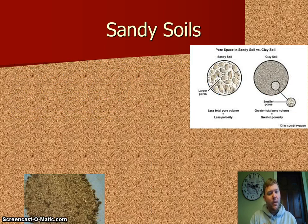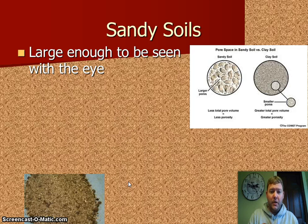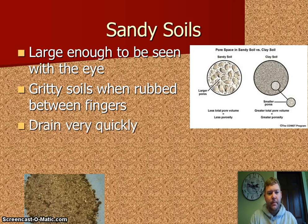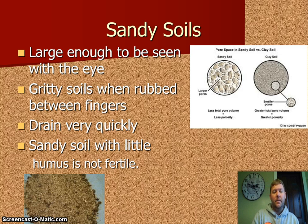Now sandy soils: they drain pretty quickly because there's a lot of space between the pores. Pure sand is probably not the best for growing because water drains through it and makes it very dry. Sand particles are large enough to be seen with the eye and are very gritty — if you rub soil through your fingers and feel grit, it has some sand. Sandy soil with little humus is not fertile.